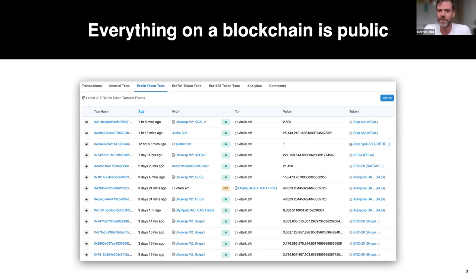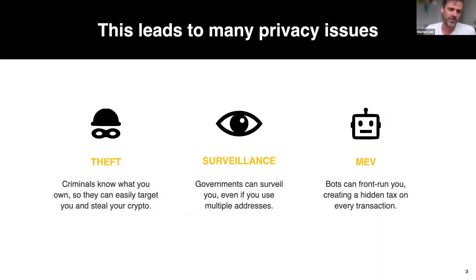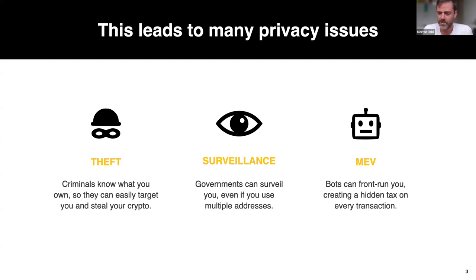Everything on the typical blockchain is public, which is good for transparency, but as we also know, has some issues around privacy. For instance, since you can see the balances of everyone, that might open you up as a target for potential criminals. You might also not be comfortable with everything you do being easily monitored. And finally, there are inefficiencies like MEV, where bots are trying to take advantage of transactions you make.